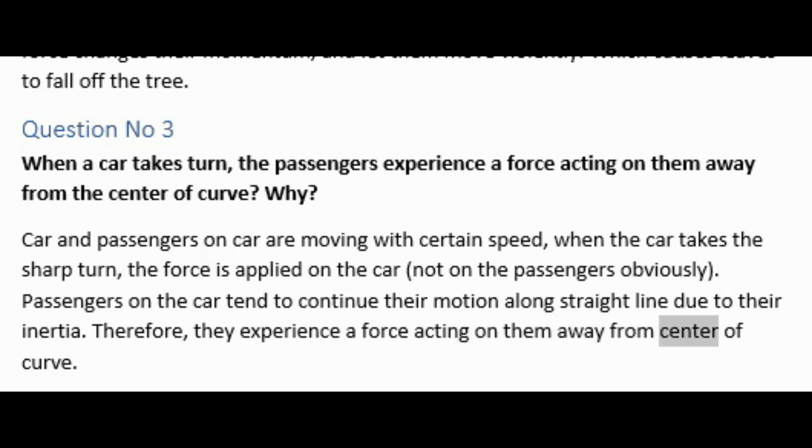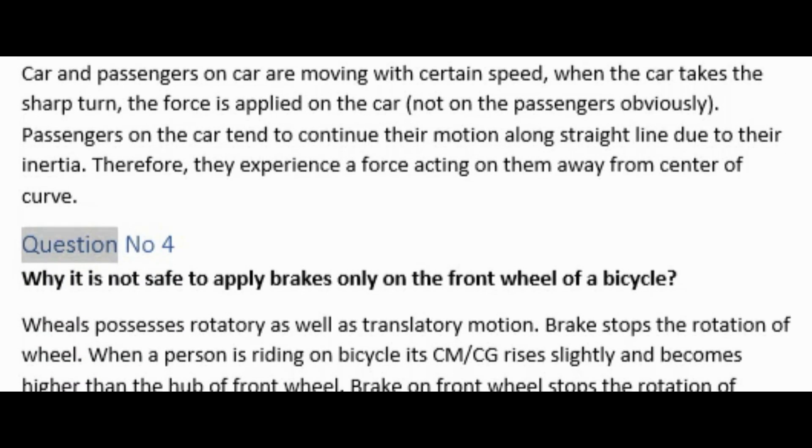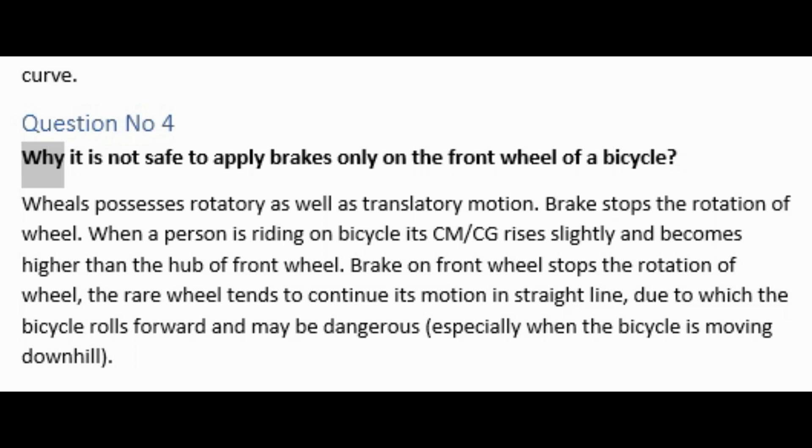Question number four: Why is it not safe to apply brakes only on the front wheel of a bicycle? Wheels possess rotatory as well as translatory motion. Brake stops the rotation of wheel. When a person is riding on bicycle, its center of mass or center of gravity rises slightly and becomes higher than the hub of front wheel.